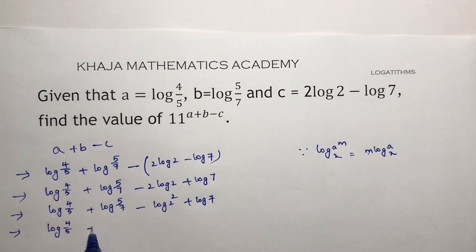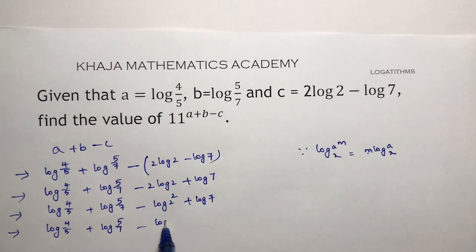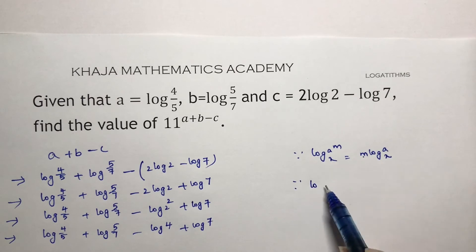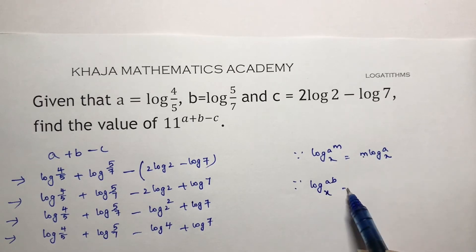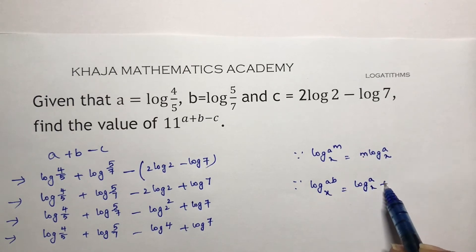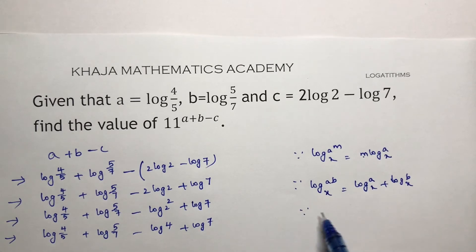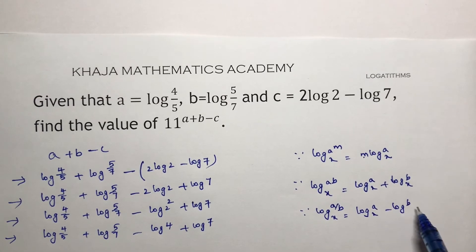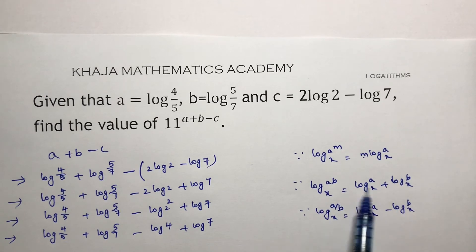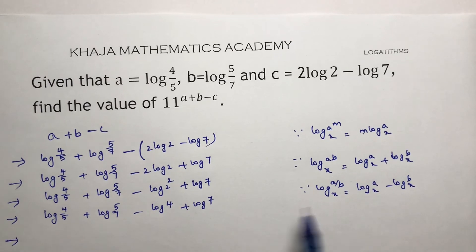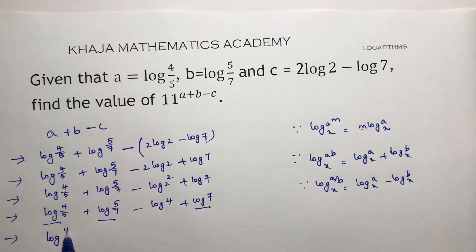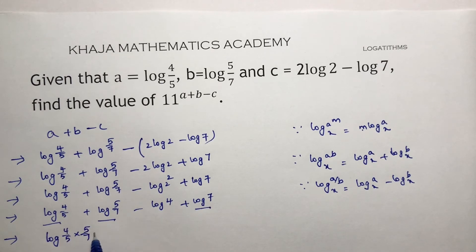Now applying the logarithm of product and quotient formulas: log(a) + log(b) = log(a·b), and log(a) - log(b) = log(a/b). Applying these, we get log[(4/5) × (5/7) × (7/4)]. The 5s cancel and the 7s cancel, giving log(4/4).